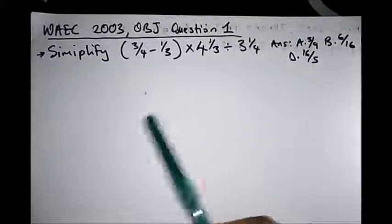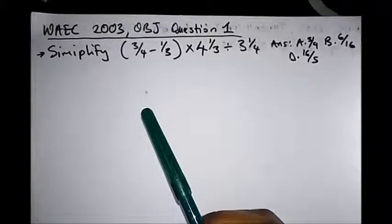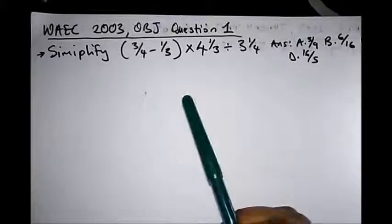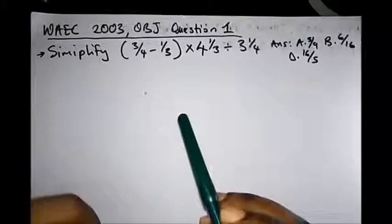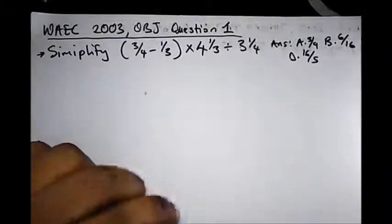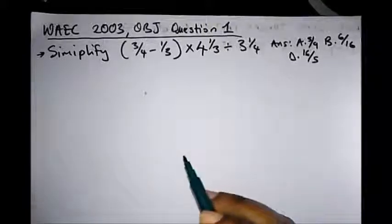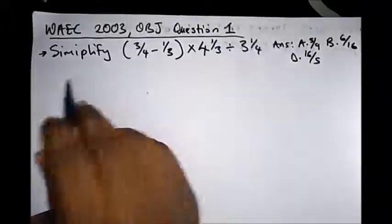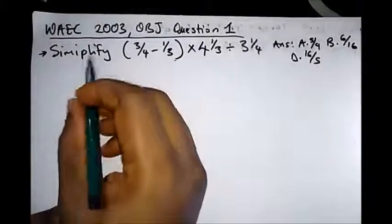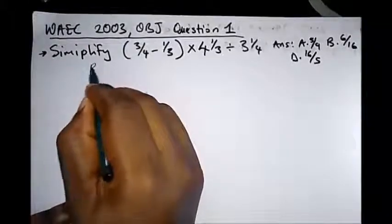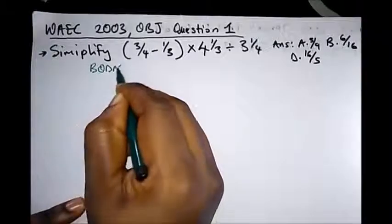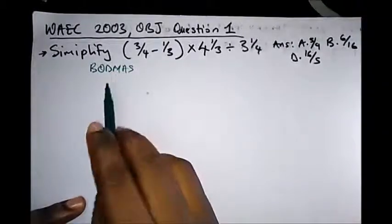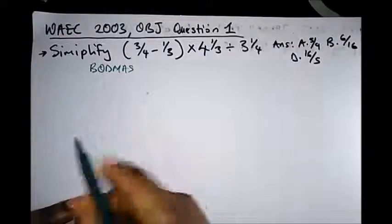Hello viewers, welcome to Destined to Win Tutorials and Projects. Welcome once again — this is part 3 where we'll treat WAEC past questions. This question is from WAEC 2003, OBJ question 1, and it says simplify this fraction. Remember we put down our rule: BODMAS. So from here we'll start with our brackets.